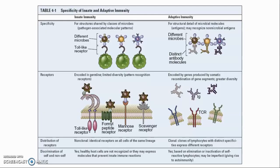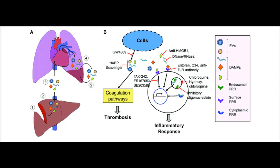Whereas the innate immune system has evolved to recognize only a limited number of molecules that are unique to microbes, the adaptive immune system is capable of recognizing many more diverse foreign substances whether or not they are products of microbes. The innate immune system also recognizes endogenous molecules produced by or released from damaged and dying cells. These substances are called damage-associated molecular patterns, DAMPs.